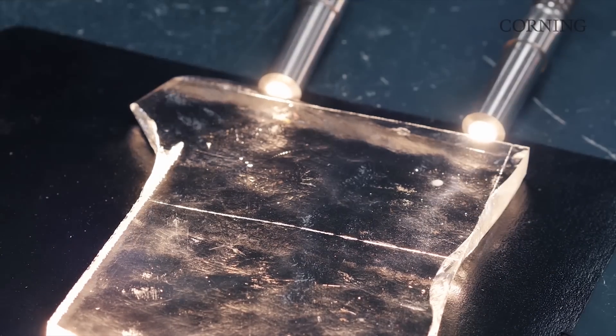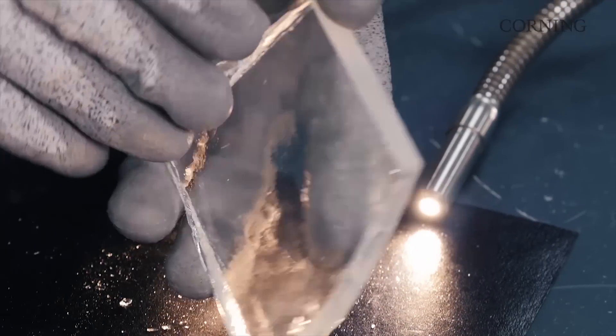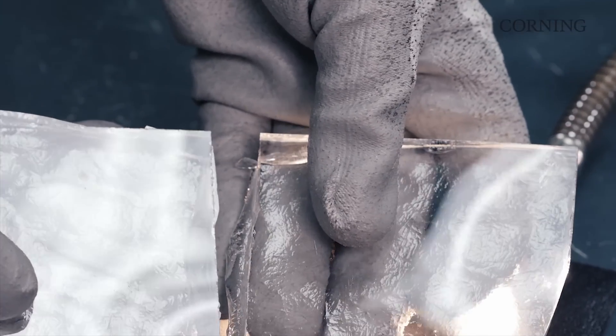And now you see the big score line. Now what I do, this is now a weak spot, so when I hit the glass, it breaks right along that score line because of the damage I've introduced.